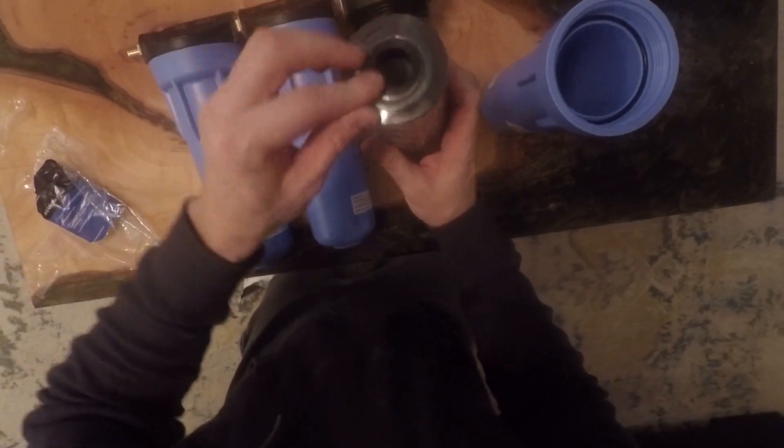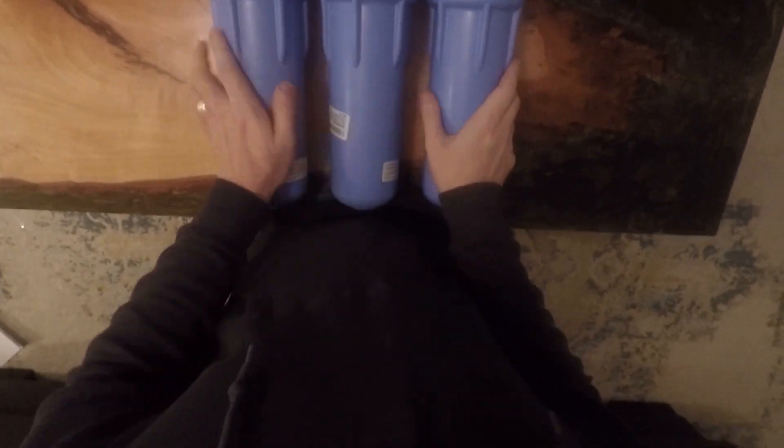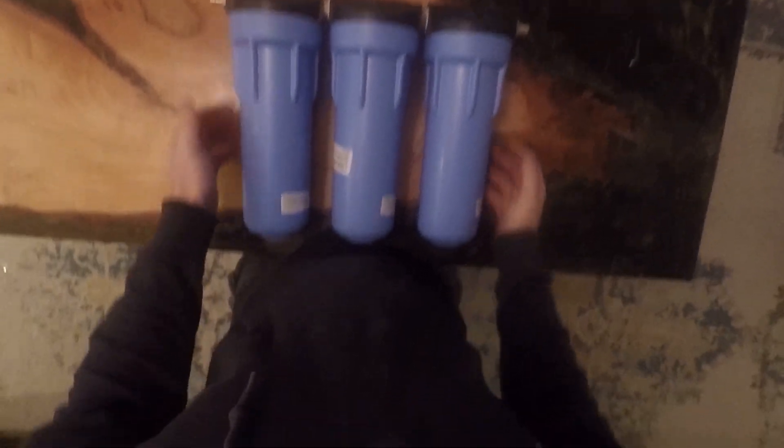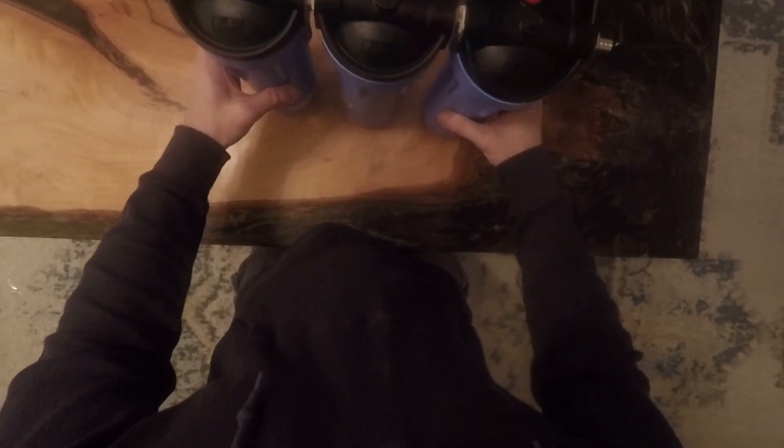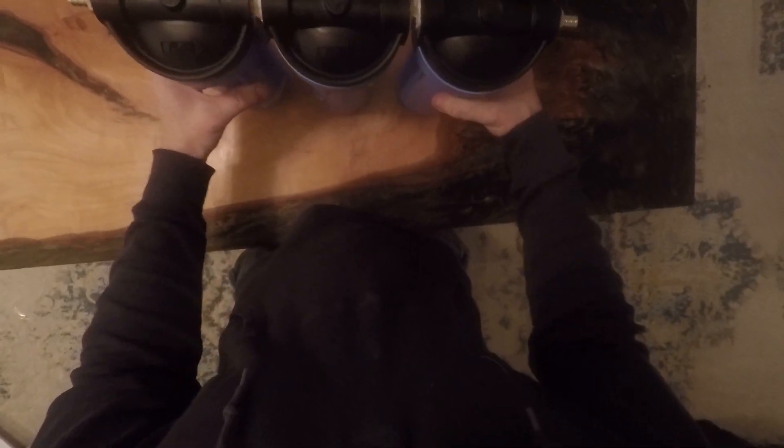And the third one is the microorganism filter, Nanoceram PAC. There it is. This is my DIY alternative to ClearSource 3 stage filter. I can use these mounting holes to screw that into plywood in my schoolie. And then PEX on each side.